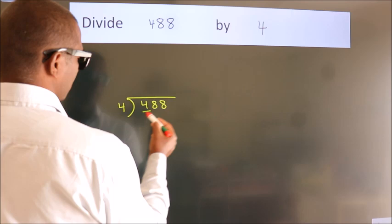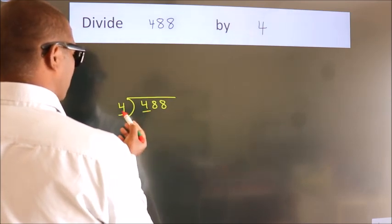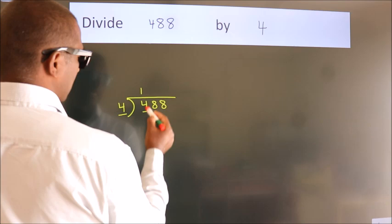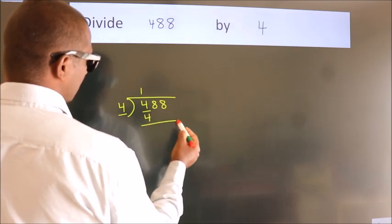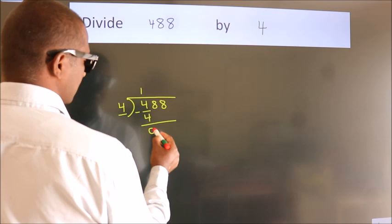Here we have 4, here 4. When do we get 4? In the 4 table. 4 once is 4. Now we should subtract. We get 0.